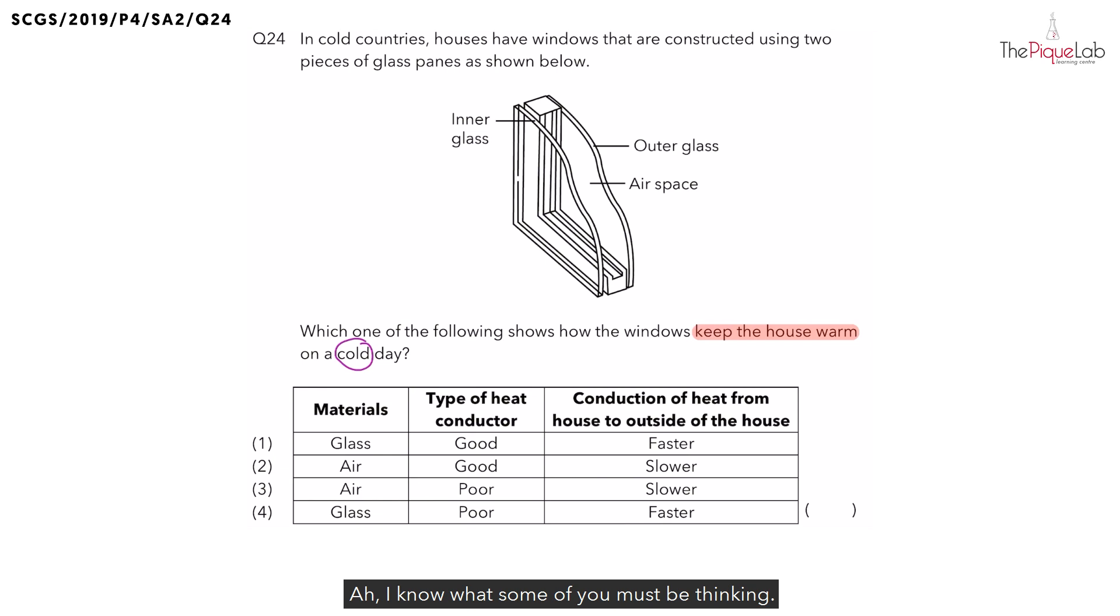I know what some of you must be thinking. Since the window above is made of glass, which is a poor conductor of heat, you will choose your answer as option 4. But option 4 is actually wrong. The question here is why?